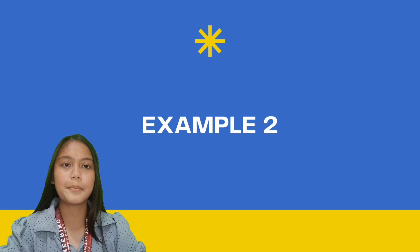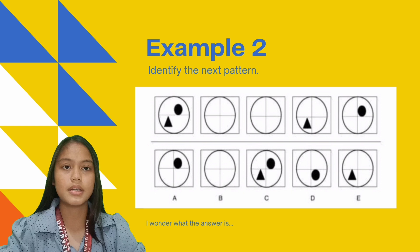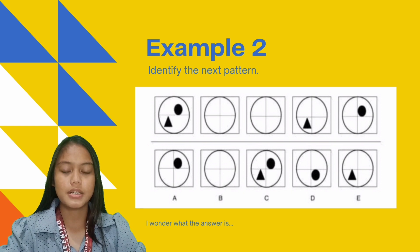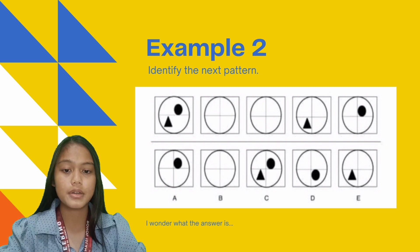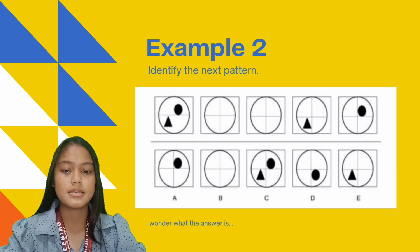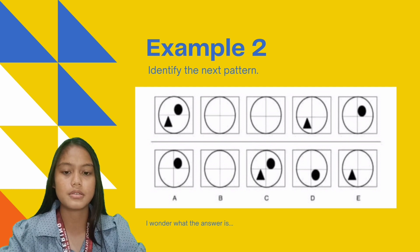Let's have example number two. Which of the boxes comes next in the sequence? Let us first examine the patterns being used here. If we're going to observe, in the first figure, there is a circle in the top right segment and there is a triangle in the bottom left segment. The circle maintains the same position in the top right segment for one turn and then is not present for the following three turns.